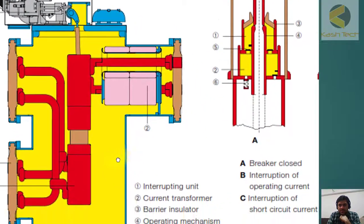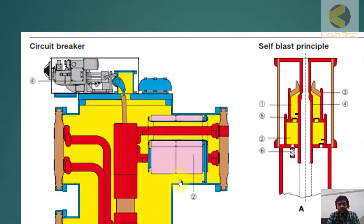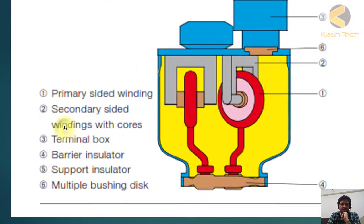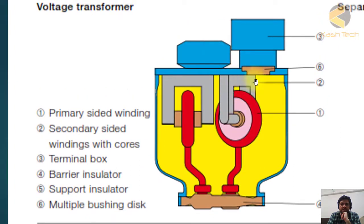This is the example of the breaker. Then we will see CT and VTs. This is the voltage transformer, further explained in detail. Number one is primary-sided winding. You can see this is the primary-sided winding. Number two is secondary-sided windings with cores. This is secondary winding, this is primary winding.